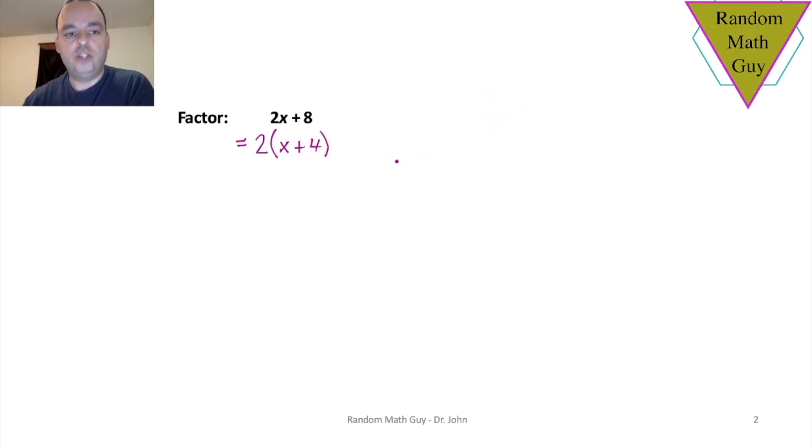Remember you can check your answer by expanding. So if you do expand this you would have 2 times x plus 4 and that will leave you with 2x and of course 2 times 4 is 8. Let's take a look at some more examples and through the series of examples I show you you should become proficient at this type of factoring.